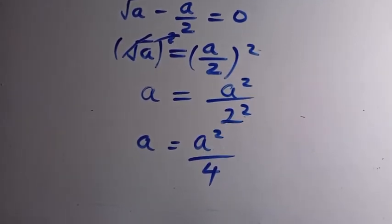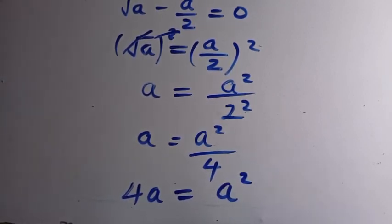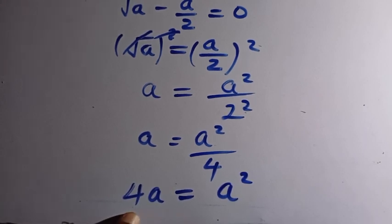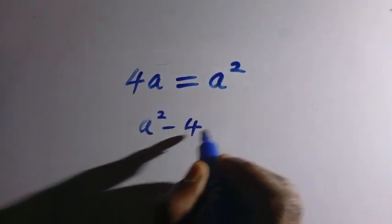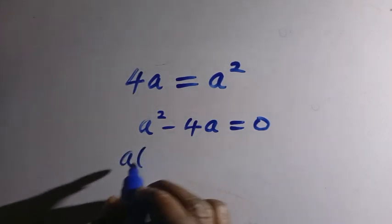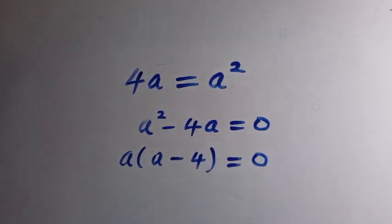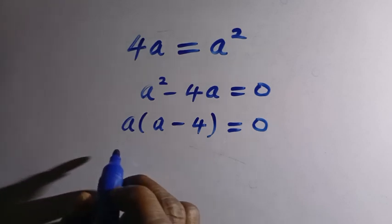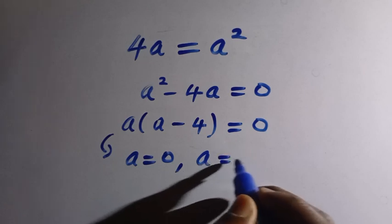Cross-multiplying gives 4a equals a squared. Collecting terms, we have a squared minus 4a equals 0. Factoring out a, we get a times (a minus 4) equals 0, which gives a equals 0 or a equals 4.